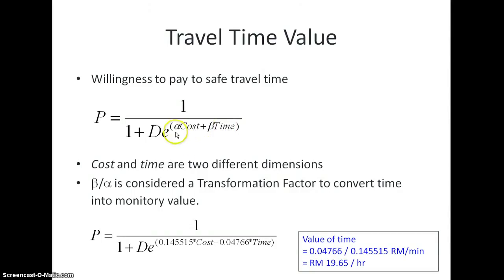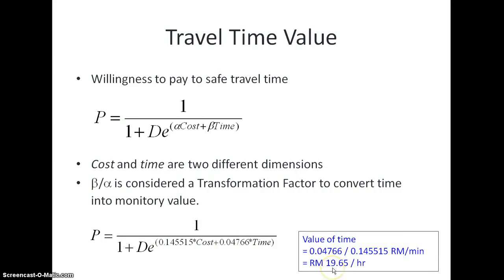To combine them, alpha and beta act as conversion factors. If we divide beta by alpha, we get a transformation factor to convert time into monetary value. In this case, dividing these parameters gives us 19 ringgit 65 cents per hour — meaning people are willing to spend about 20 ringgit to save one hour of travel time.